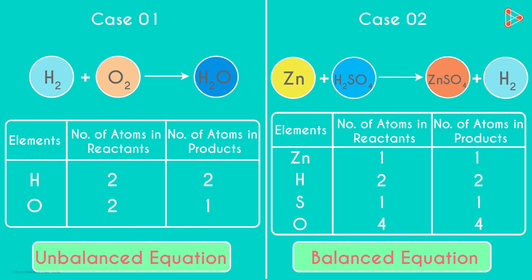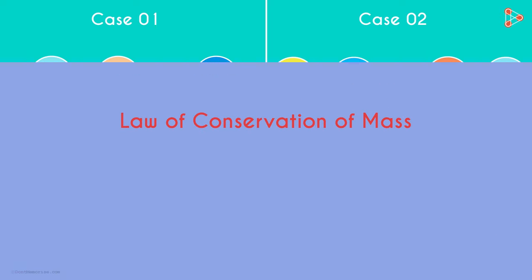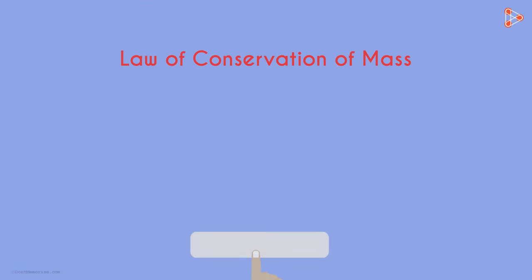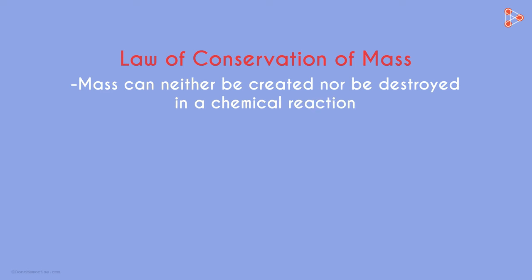But why is the unbalanced equation called so? Do you remember the law of conservation of mass? According to the law of conservation of mass, mass can neither be created nor destroyed in a chemical reaction. So the total mass of elements present in the reactants must be equal to the total mass of elements in the products.